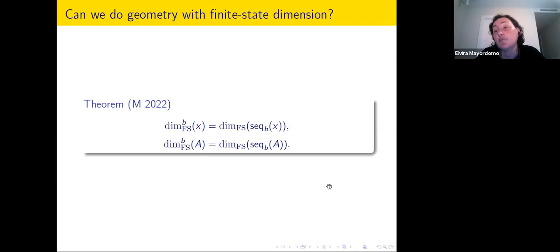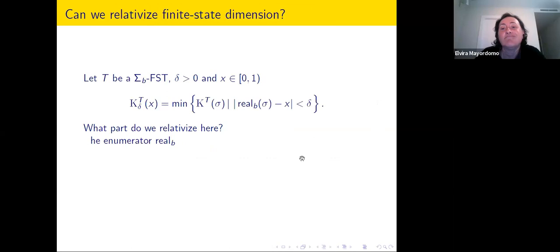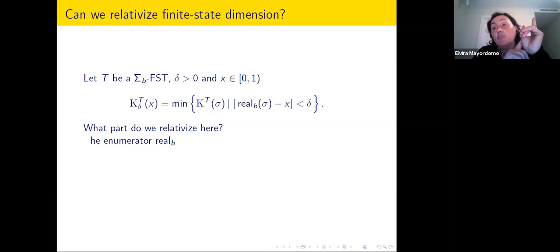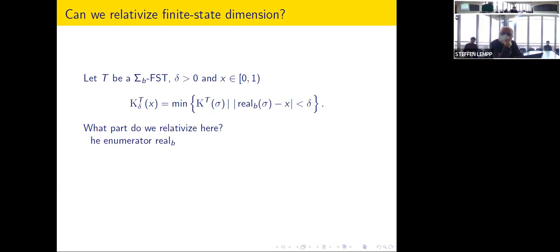So you can have a finite state dimension characterization that is slightly closer to our idea of how the metric in Euclidean space should work. Once you have this, you again try to see if you can do the point-to-set principle here. In order to do the point-to-set principle, we need to relativize. The point-to-set principle says that classical dimension coincides with effective dimension if you relativize and take the best oracle. So what do you relativize here?